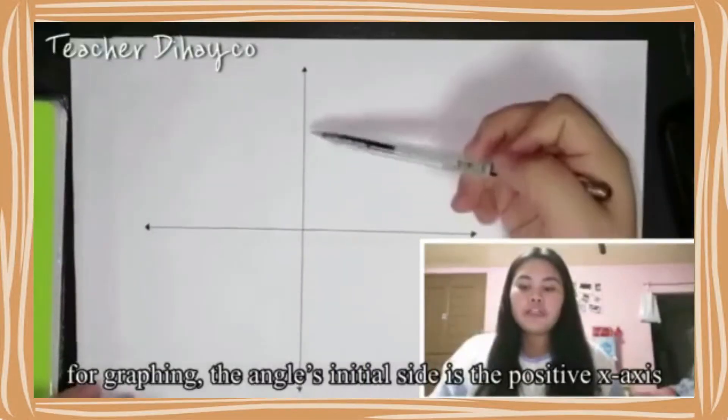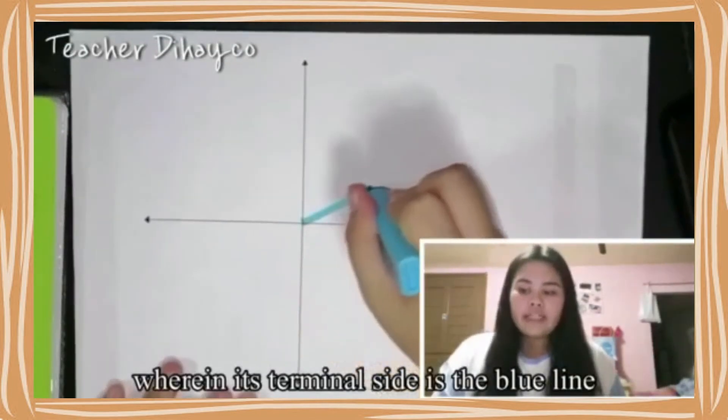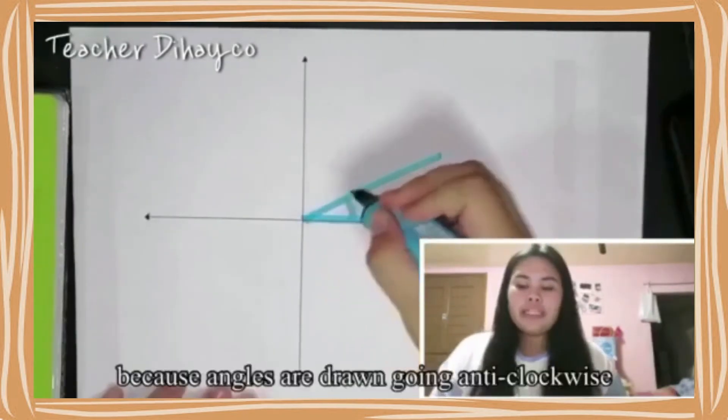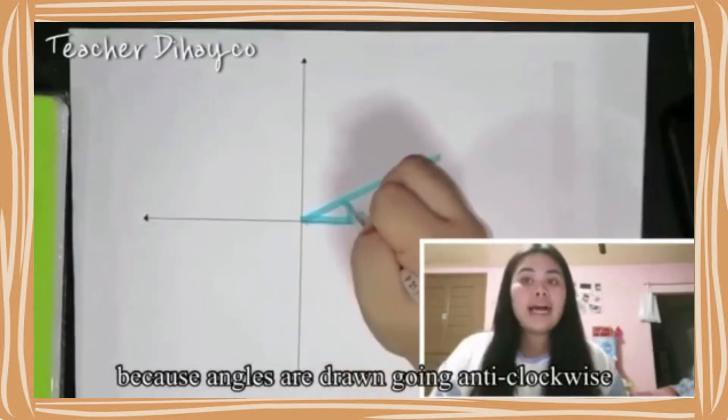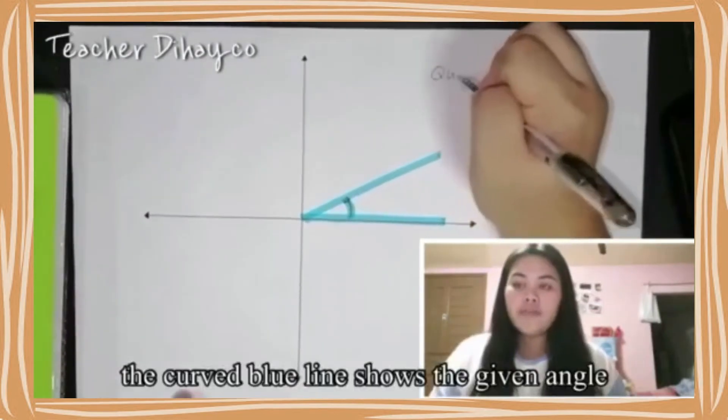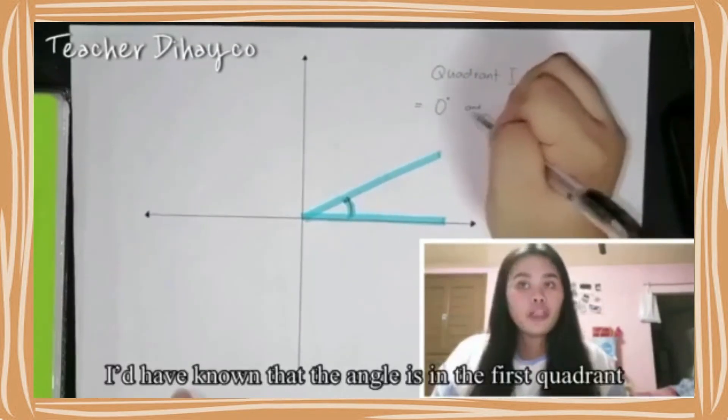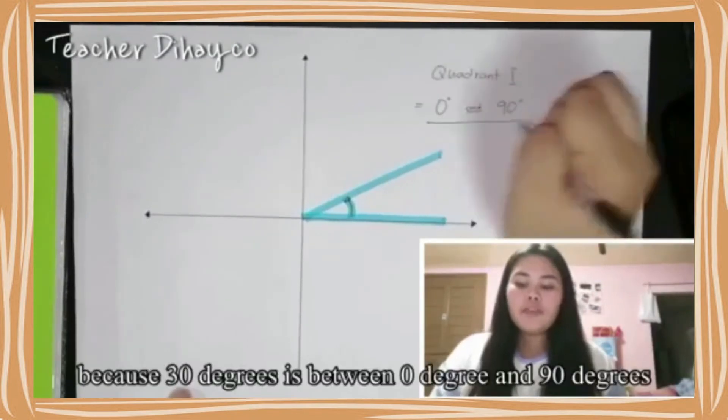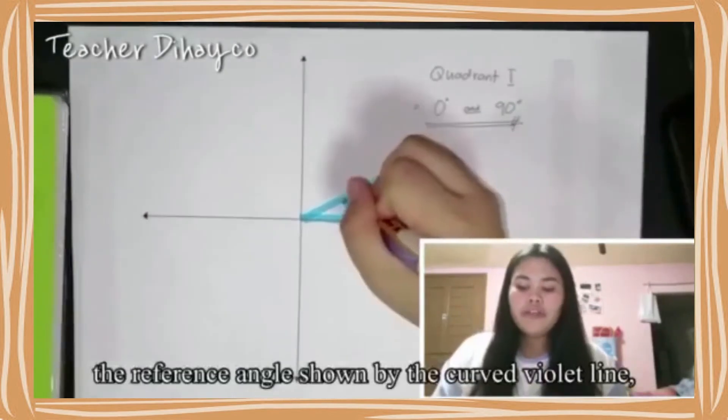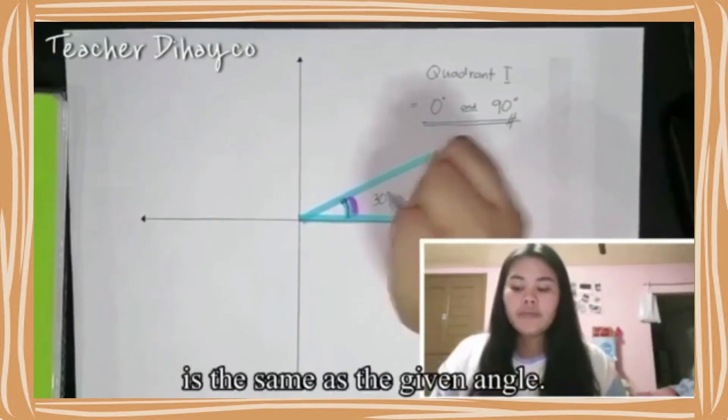The angle that measures 30 degrees would graph like this. For graphing, the angle's initial side is in the positive x-axis wherein its terminal side is the blue line. Because angles are drawn going anti-clockwise, the curved blue line shows the given angle. Even before having drawn the angle, I have known that the angle is in the first quadrant, because 30 degrees is between 0 degree and 90 degrees. The reference angle shown by the curved violet line is the same as the given angle.